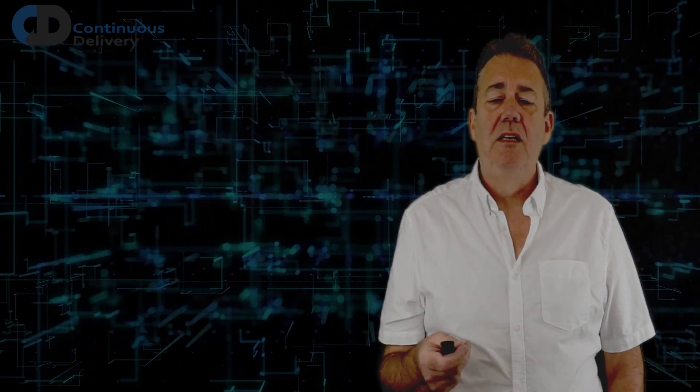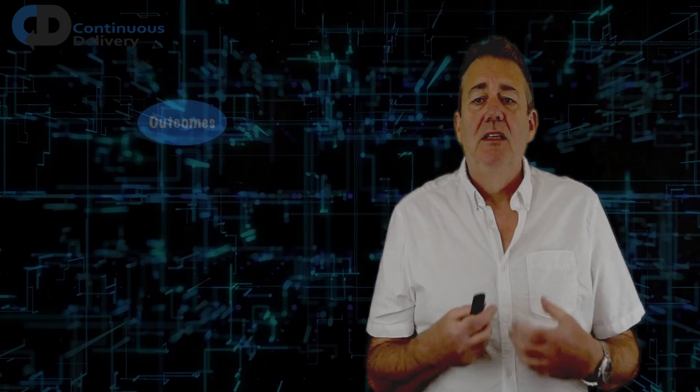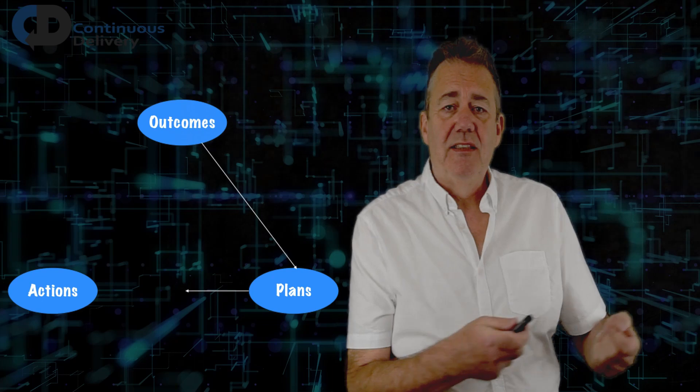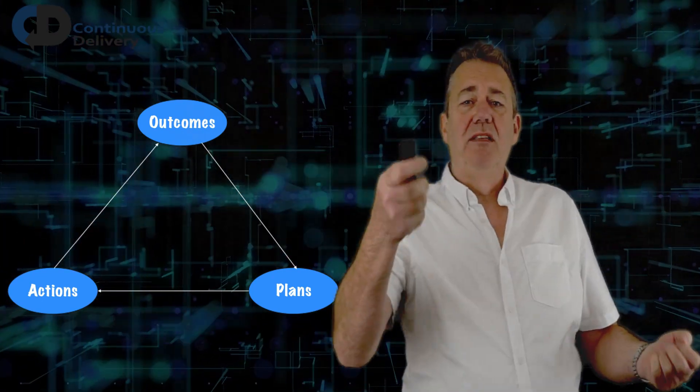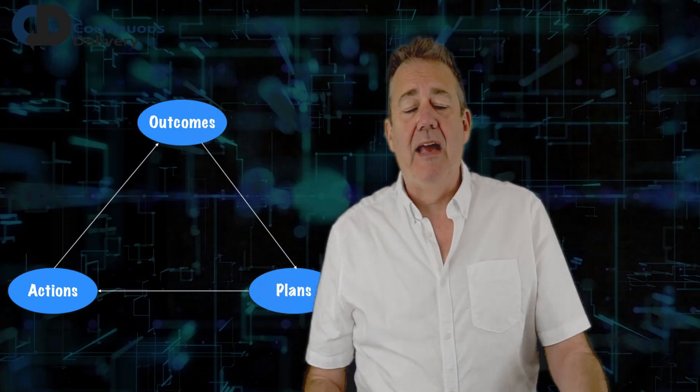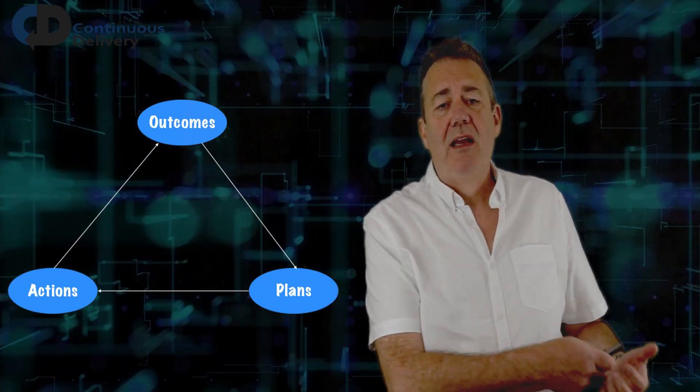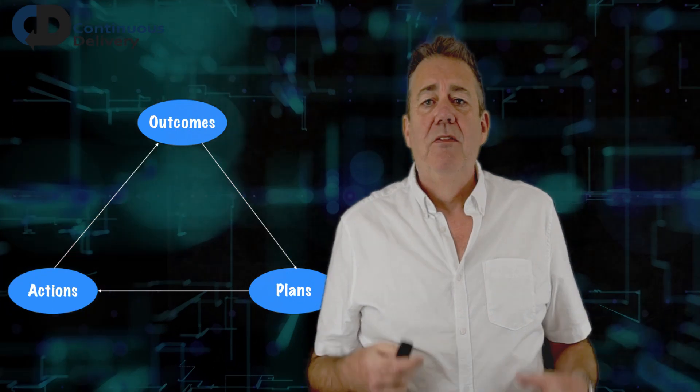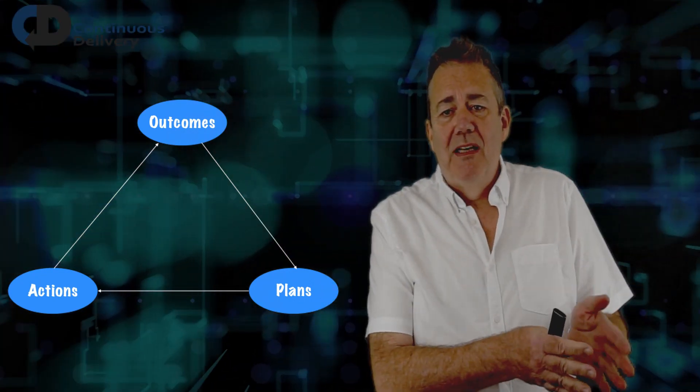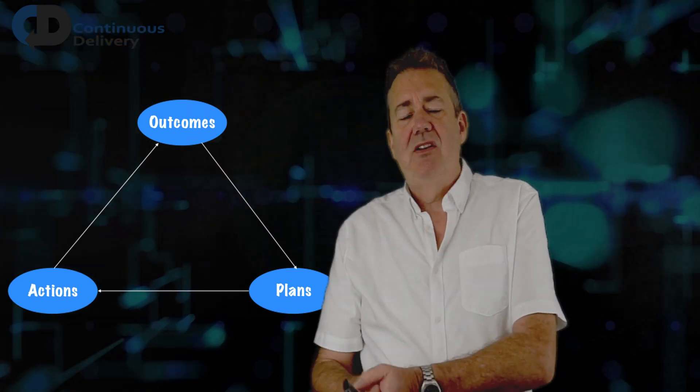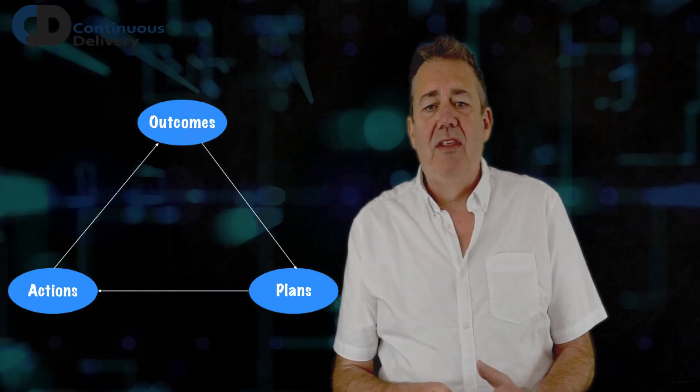Another way to think about this is described in the book, The Art of Action by Stephen Bungay. To achieve any outcome, we need to plan what we're going to do and then we need to act on that plan and then we're going to get some kind of outcome. So we've got a hopeful outcome, a plan, an action and an actual outcome. The trouble is that there are gaps in our understanding between the desirable outcome and the plan, the plan and the action and the actual outcome.